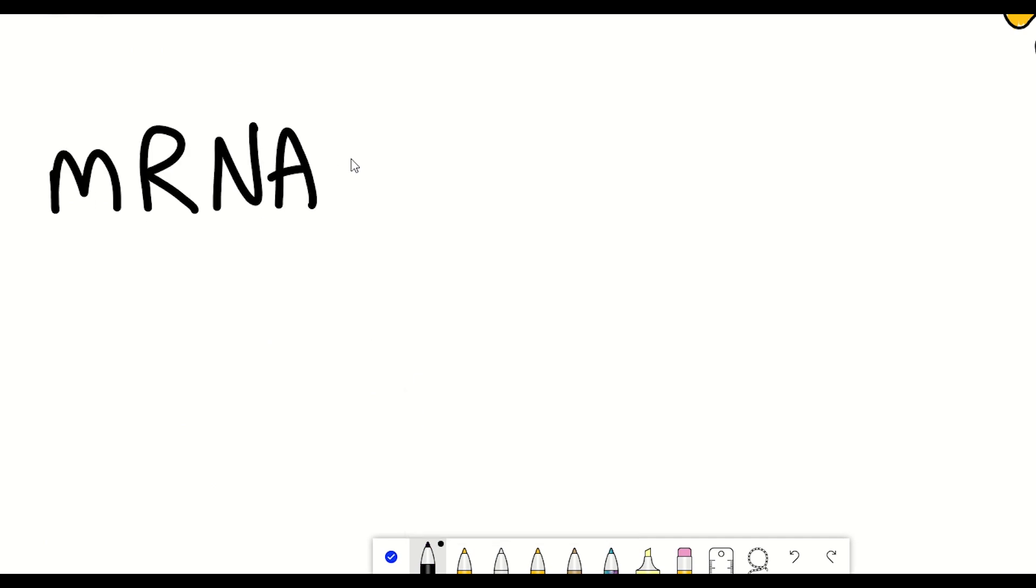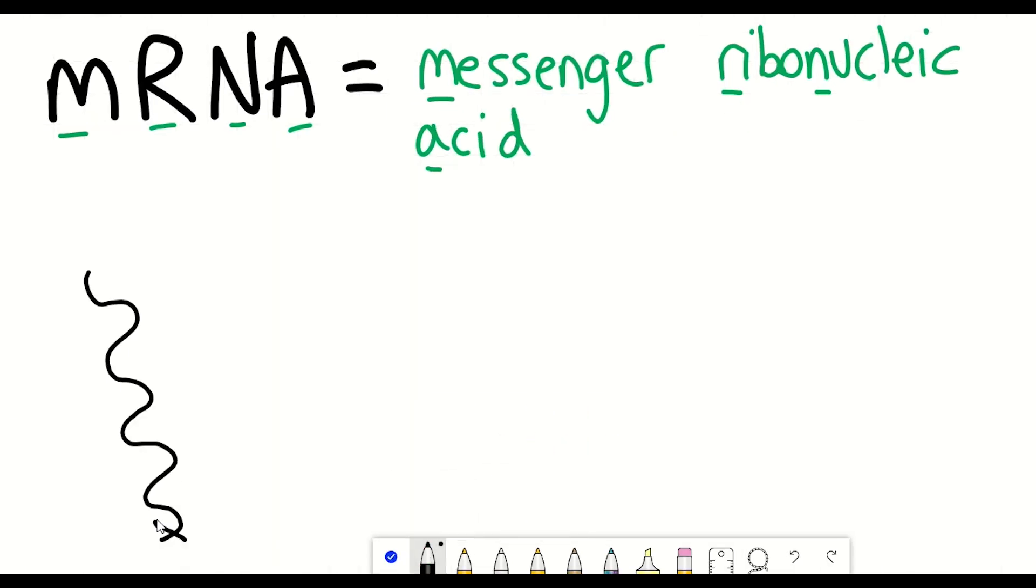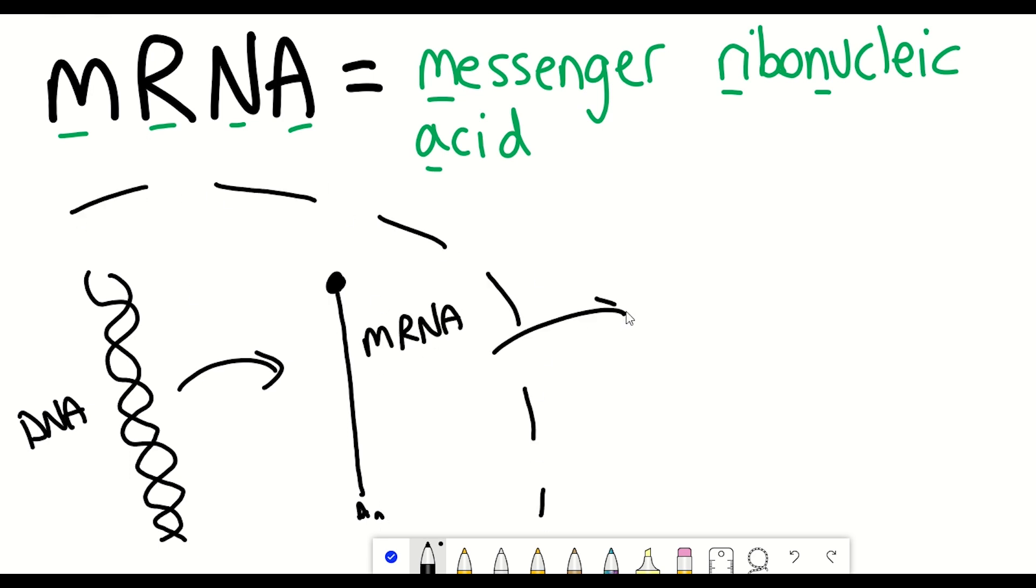Well, mRNA stands for messenger ribonucleic acid, and this mRNA is an intermediate in gene expression that resides between DNA and production of a protein.